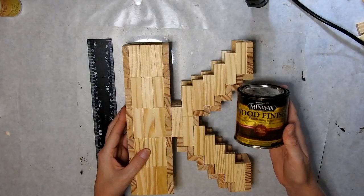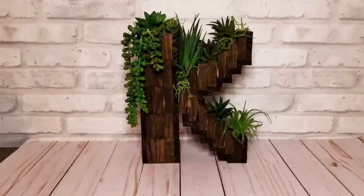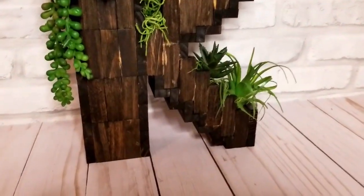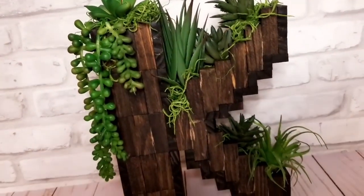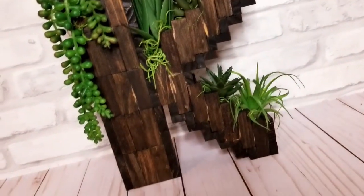I used some Minwax stain in the shade Jacobean, and I think it turned out beautiful. Let me know what you think in the comments. Obviously I filled it with some Dollar Tree succulents, but you could put anything you wanted in it.